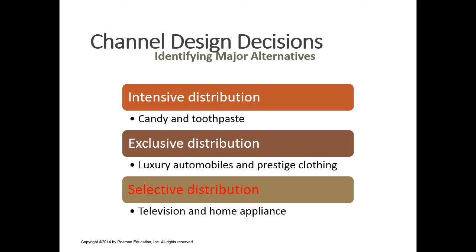Most brands have to make an initial decision about how they want to distribute their product in terms of what I would call density. For intensive distribution, we're talking about low information, impulse buying kinds of products like candy and snack foods. Intensive distribution means having it in convenience stores, traditional department stores, supermarkets, anywhere where you would sell food, snacks, or in the case of toothpaste, health and beauty aids. Intensive basically means you pretty much have it anywhere you can buy it in retail.